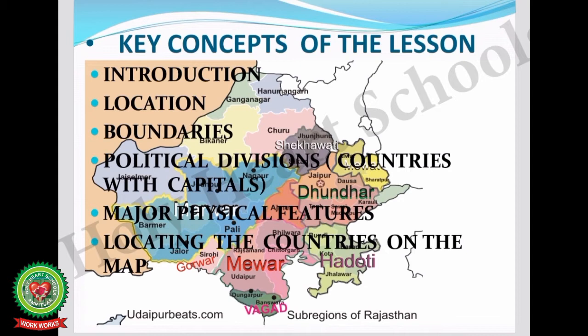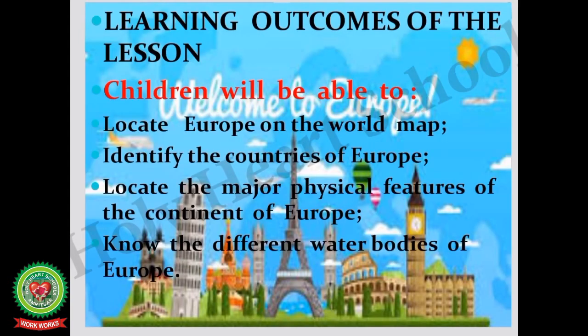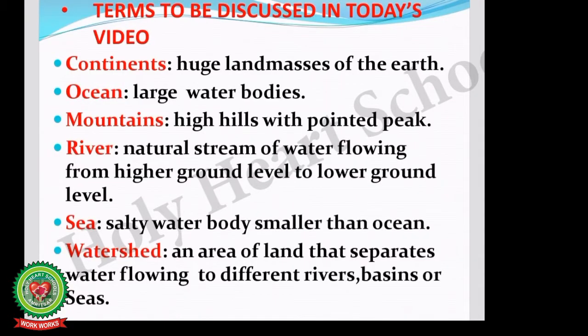Key concepts also include countries with capitals, major physical features, and locating the countries on the map of Europe. The learning outcomes of the lesson are: children will be able to locate Europe on the world map, identify the countries of Europe, and locate the major physical features of the continent of Europe.